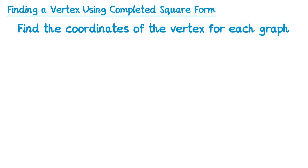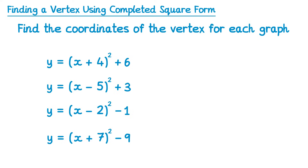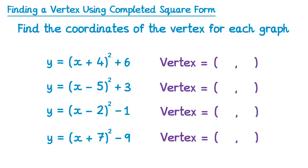Let's try some quick examples. These are already written in completed square form. For the first one, the number in the bracket is positive 4, so we take the opposite sign, negative 4, and keep the positive 6 at the end: vertex (−4, 6). For the next, bracket has negative 5, so positive 5, and keep the 3: vertex (5, 3). Then bracket has negative 2, opposite sign is positive 2, but keep the negative 1: vertex (2, −1). And the last one, positive 7 in the bracket gives negative 7, and we keep the negative 9: vertex (−7, −9).